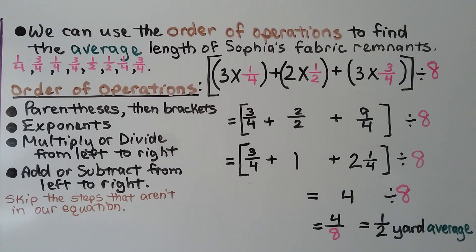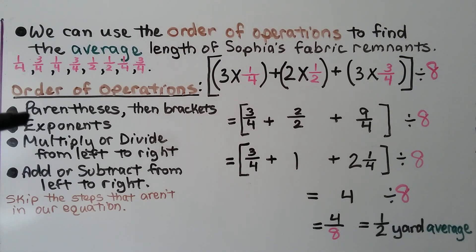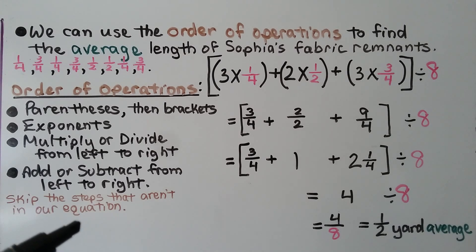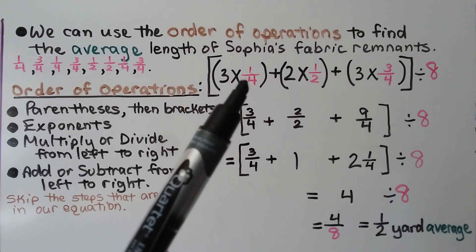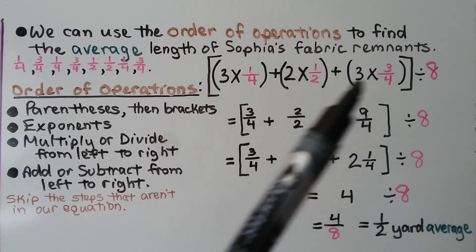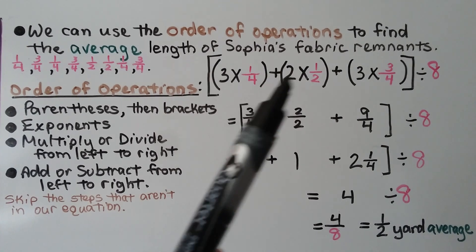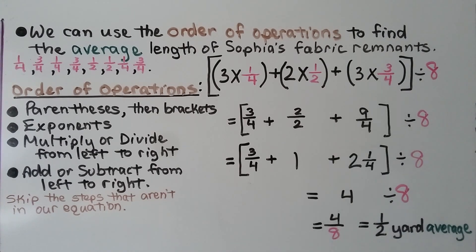We can also use the order of operations to find the average length of Sophia's fabric remnants. The order of operations tells us to do parentheses first, then brackets, then exponents, then multiply or divide from left to right, then add or subtract from left to right, skipping steps not in our equation. In this case, there are no exponents. We start with the parentheses: three times one-fourth, added to two times one-half, added to three times three-fourths. Once we do this multiplication and add them, we divide everything in the bracket by the eight fabric remnants.